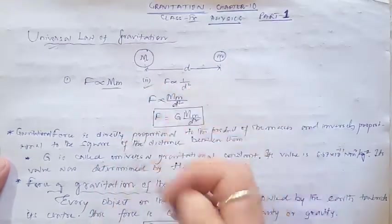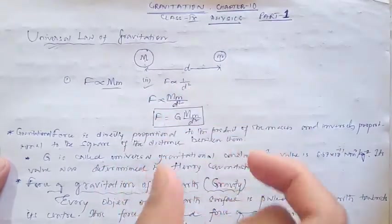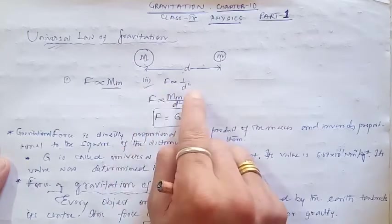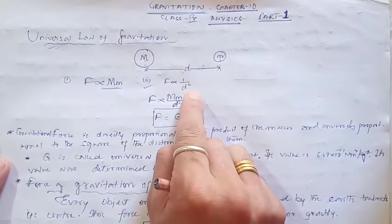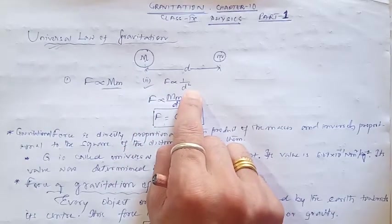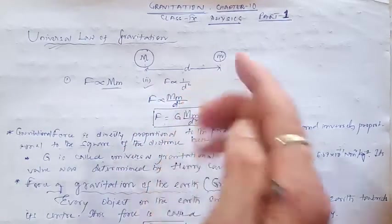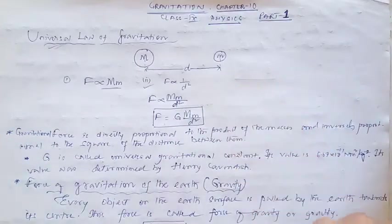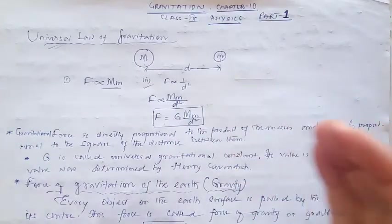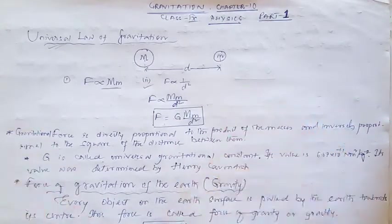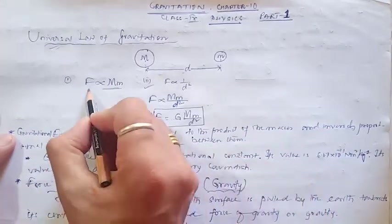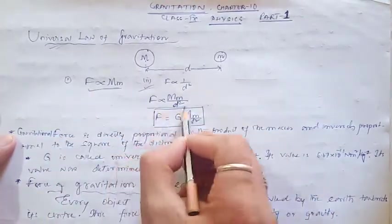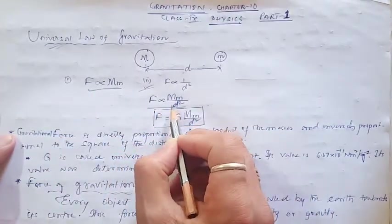This law also says the force depends upon the distance between the two bodies. Force is inversely proportional to the square of the distance between the two bodies. Larger the distance, smaller is the force of attraction; smaller the distance, larger is the attraction. Combining these two relations, we get F is proportional to Mm divided by d square.